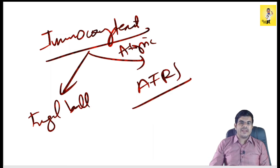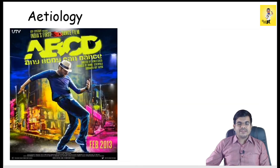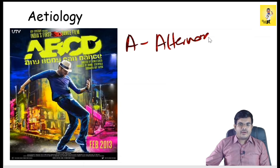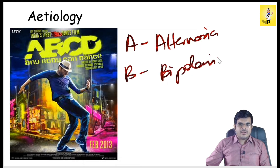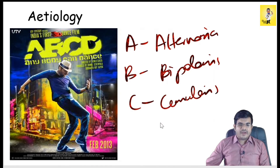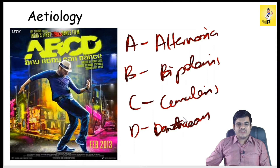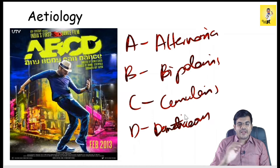The etiological agents implicated in the formation of AFRS can be remembered as ABCD: A for Alternaria, B for Bipolaris, C for Curvularia, and D for Dematiaceous fungi. These are all dematiaceous fungi — this is how you remember the etiological agents causing allergic fungal rhinosinusitis.